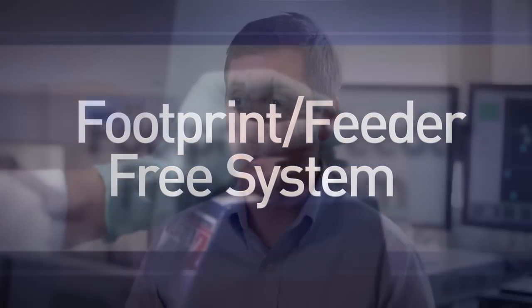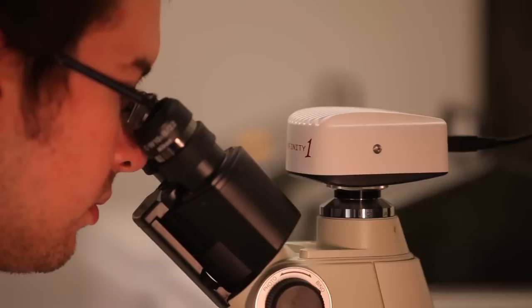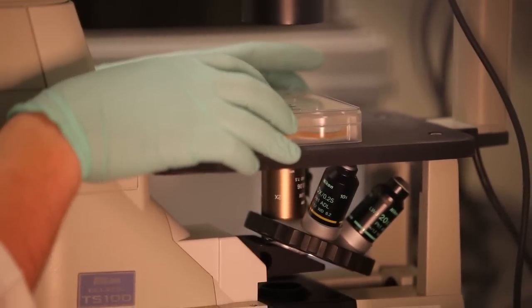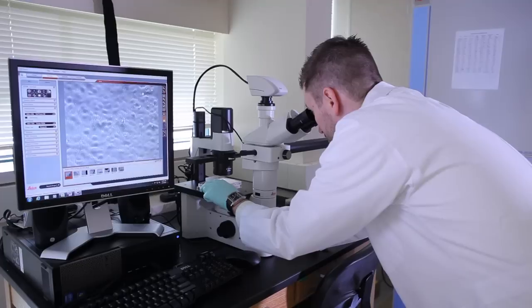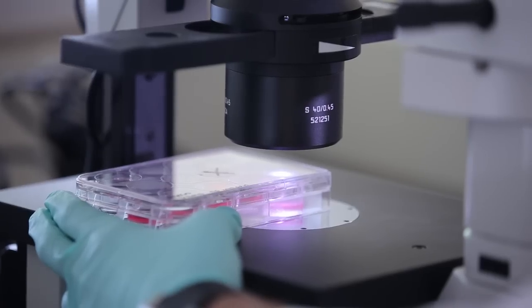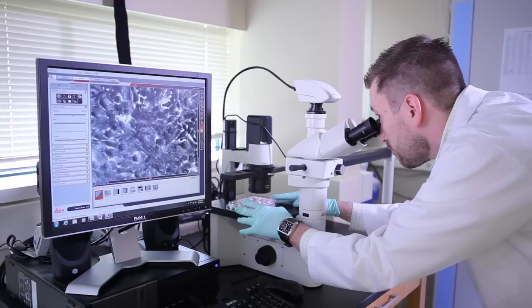There's several different ways you can do this footprint-free. Episomal, we think, works really well. We get footprint-free colonies, we get the numbers you'd want, and they're fully pluripotent. And when you use episomal reprogramming in combination with a defined feeder-free system, like the vitronectin and Essential-8, you end up with a more stable platform. The colonies tend to be the same every time and behave the same.